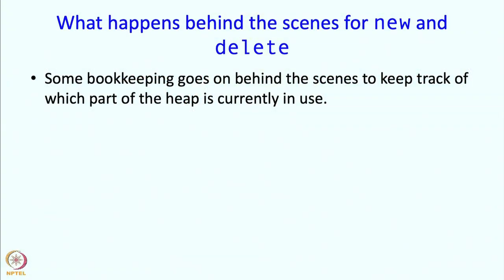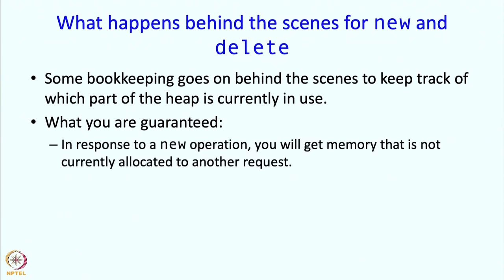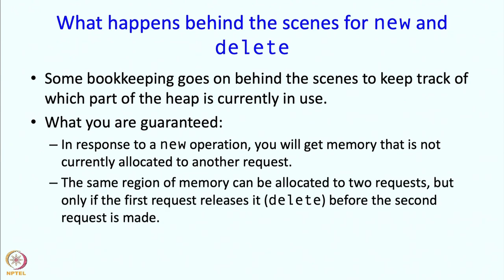new and delete are reserved words and they are also operators. A lot happens behind the scenes for new and delete — there is some bookkeeping which keeps track of which part of the heap is currently in use. As a result of this bookkeeping you are guaranteed that in response to a new request you will get memory that is not currently allocated to another request. Of course if the heap is full your program will abort, but if not, you will get that memory. The same region of memory can be allocated to two requests, but only if the first request releases it using delete before the second request is made.